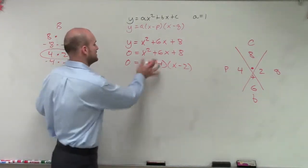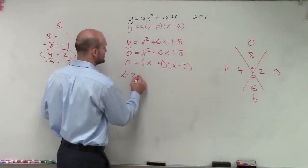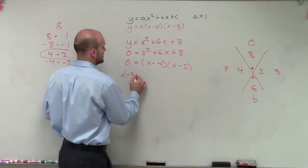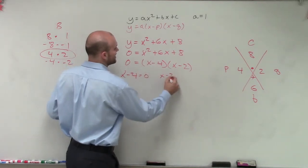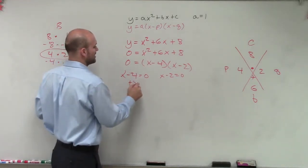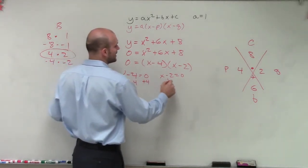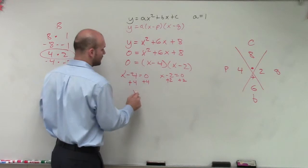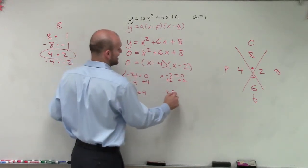Now we can apply the zero product property to solve. So I set them both equal to 0. x minus 4 equals 0 and x minus 2 equals 0. Now I isolate my variable by adding 4 to both sides, add 2 to both sides. And therefore, x equals 4 and x equals 2.